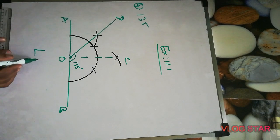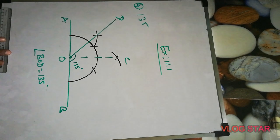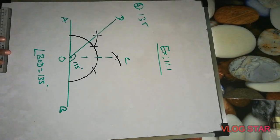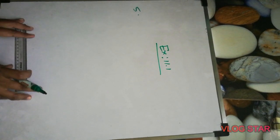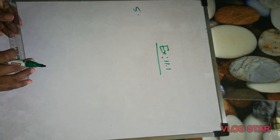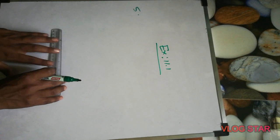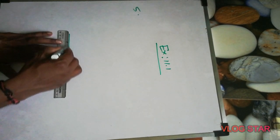So this is 135 degrees. You can put it as angle BOD equal to 135 degrees. That's question four over. Now the last question — question number five: construct an equilateral triangle given its side and justify the construction. Just draw a line.